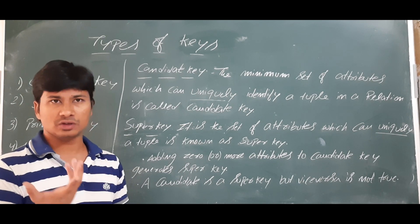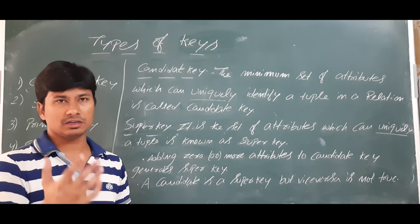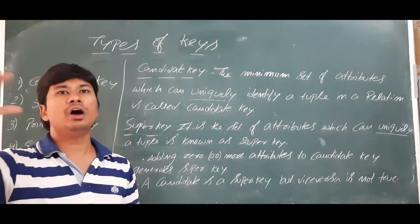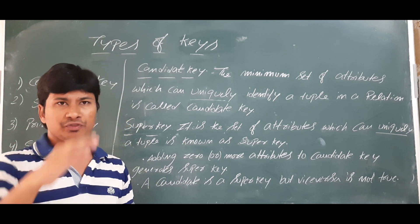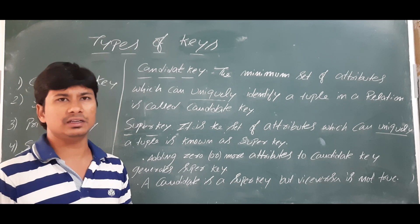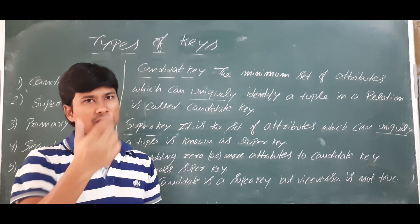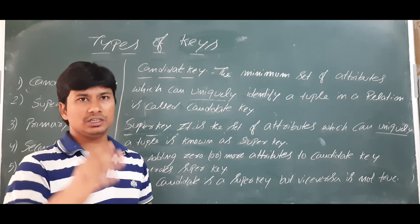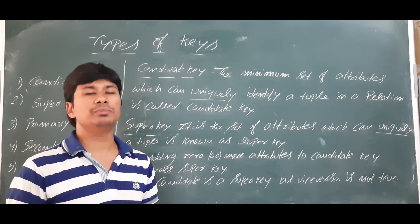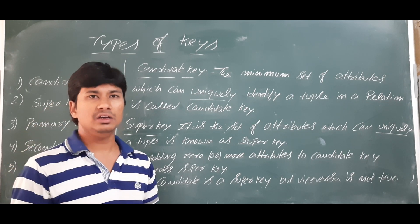Now you may ask: is only one candidate key possible for a relation? No, we can have more than one candidate key. For example, consider car details entered for an apartment. Using the vehicle registration number, we can uniquely identify a car because each car has a unique registration number.